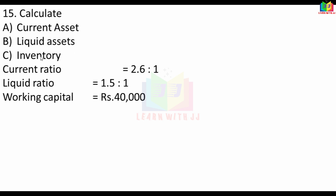Calculate current asset, liquid asset, and inventory. Current ratio is 2.6:1. Liquid ratio is 1.5:1. Working capital is 40,000. Now, what is current ratio? Current assets divided by current liabilities — that ratio is 2.6:1. Current asset is 2.6 and current liability is 1.